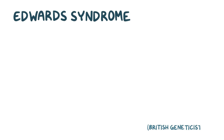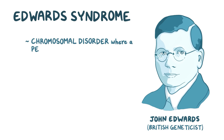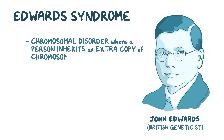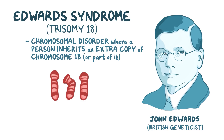Edwards syndrome, named after the British geneticist John Edwards who first identified it, is a chromosomal disorder where a person inherits an extra copy of chromosome 18, or a part of it. So instead of having two, they have three chromosome 18s, and so Edwards syndrome is also known as trisomy 18 — in other words, three chromosome 18s.